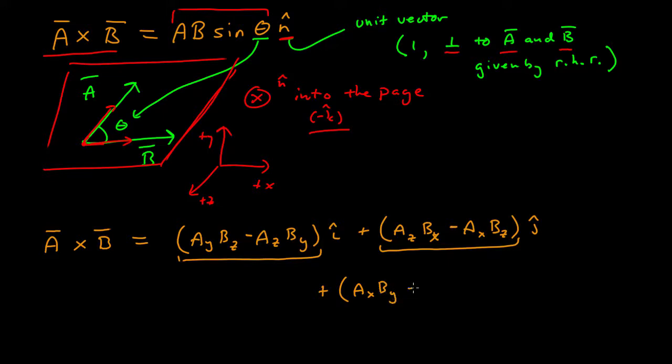And the x component of A times the y component of B minus the y component of A times the x component of B. And this is now the z component of the cross product.